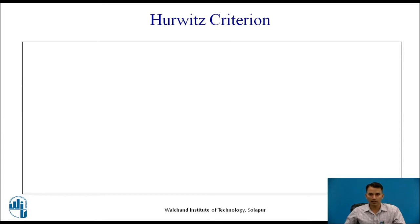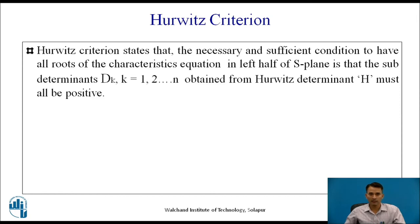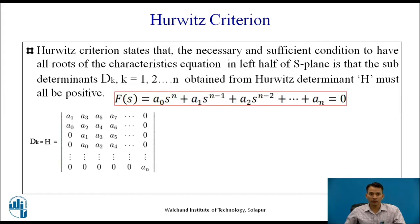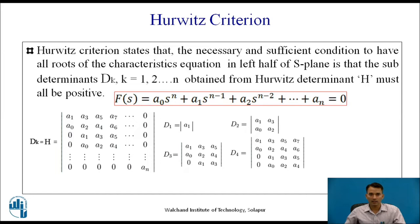Let us recall Hurwitz Criteria. In Hurwitz Criteria, it states that the necessary and sufficient condition to have all roots of the characteristic equation in the left half of the S-plane is that the sub-determinants dk, where k=1 to n, obtained from Hurwitz's determinant H must all be positive. Hurwitz's determinant H is written from the characteristic equation, and the Hurwitz determinants are calculated as d1, d2, d3, d4 and so on.